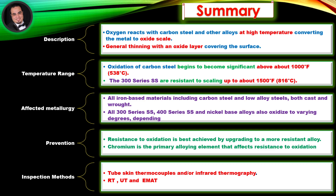Affected metallurgy: all iron-based materials including carbon steel and low-alloy steels, both cast and wrought. All 300-series, 400-series stainless steel, and nickel-based alloys also oxidize to varying degrees. Prevention: resistance to oxidation is best achieved by upgrading to a more resistant alloy. Chromium is the primary alloying element that affects resistance to oxidation.